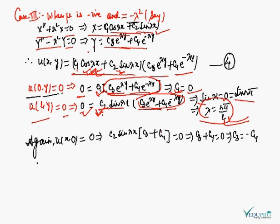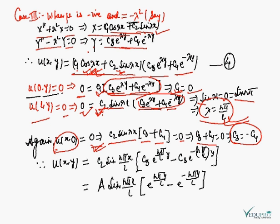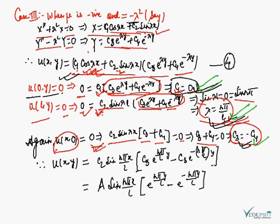With λ = nπ/L established, applying the third boundary condition u(x,0) = 0: c₂sin(λx)·(c₃ + c₄) = 0. Since c₂ ≠ 0 and sin(λx) ≠ 0, we get c₃ + c₄ = 0, so c₃ = −c₄. These results — c₁ = 0, λ = nπ/L, and c₃ = −c₄ — are now substituted back.